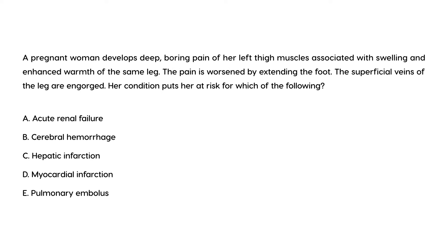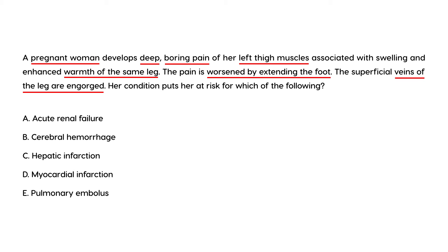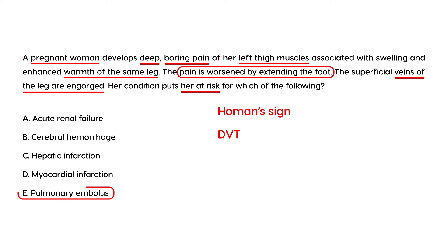Let's look at a clinical vignette. A pregnant woman develops deep boring pain of her left thigh muscles associated with swelling and enhanced warmth of the same leg. Pain is worsened by extending the foot — known as Homan's sign. The superficial veins of the leg are engorged. Her condition puts her at risk of which of the following? This woman has a DVT, and her pregnancy — particularly the third trimester — increases her risk. The question is asking what she is at risk of developing, and the answer is a pulmonary embolism.